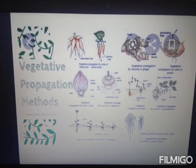A bulb is an underground stem reduced to a compact disc-like structure with adventitious roots. Food is stored in fleshy leaves that overlap in a bulb-like structure, with terminal and lateral buds also forming. Examples: onion and garlic.